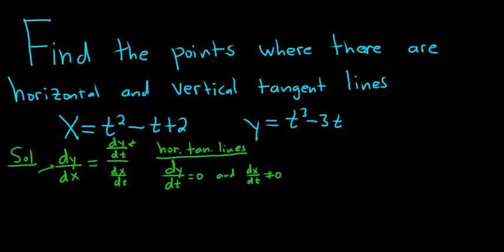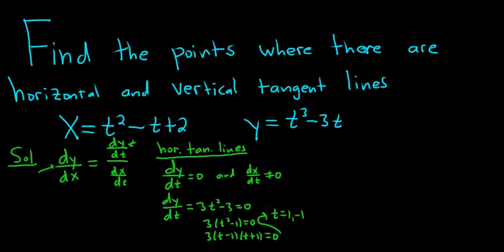So dy/dt in this problem is pretty easy to compute. Using the power rule, we would get 3t² - 3, and we set that equal to zero. Then we can pull out a 3, and we get t² - 1 = 0. Factor that: 3(t - 1)(t + 1) = 0. So we have two possible candidates, 1 and negative 1. These are possible values of the parameter where we have horizontal tangent lines.